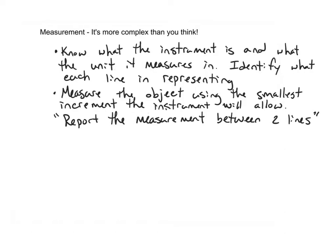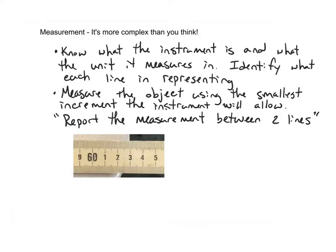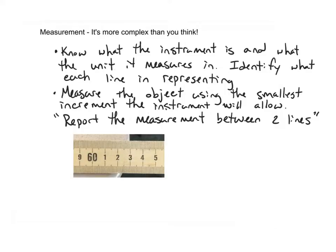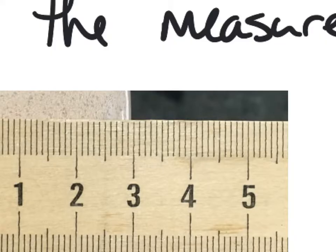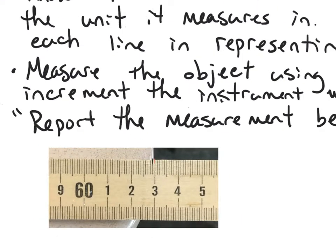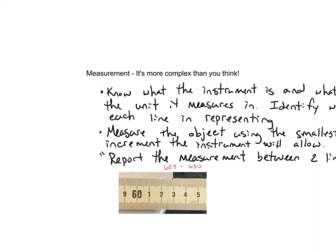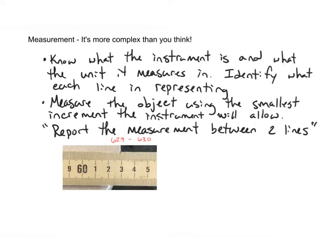When you're measuring an object, you want to use the smallest increment that the instrument will allow. If you've got very fine instrumentation with a lot of different measurement marks, you want to use the smallest marks available. Here's a snapshot of that measurement of the width of the desk. Zooming in, it's clear that the desk is between two lines — somewhere between 62.9 and 63.0. That's the first step in the measuring technique: make sure you report your measurement between two lines.